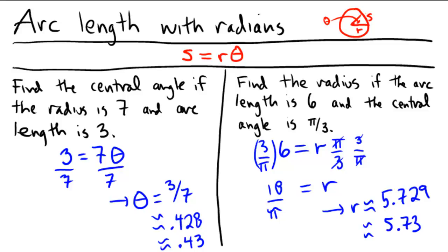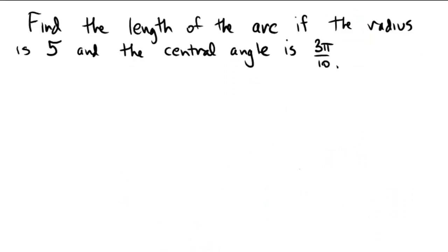Last example, why don't you pause and see if you can do this one on your own. Put the unknown in a different spot this time, and we ask, what's the length of the arc if the radius is 5 and the central angle is 3 pi over 10?